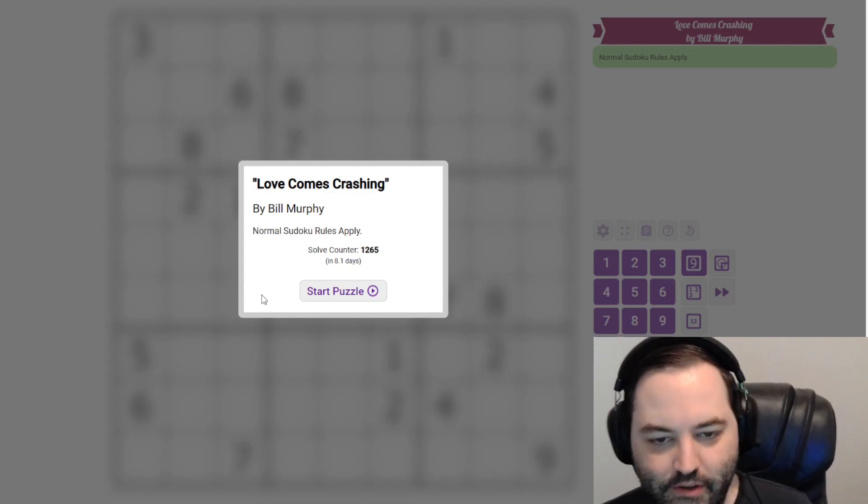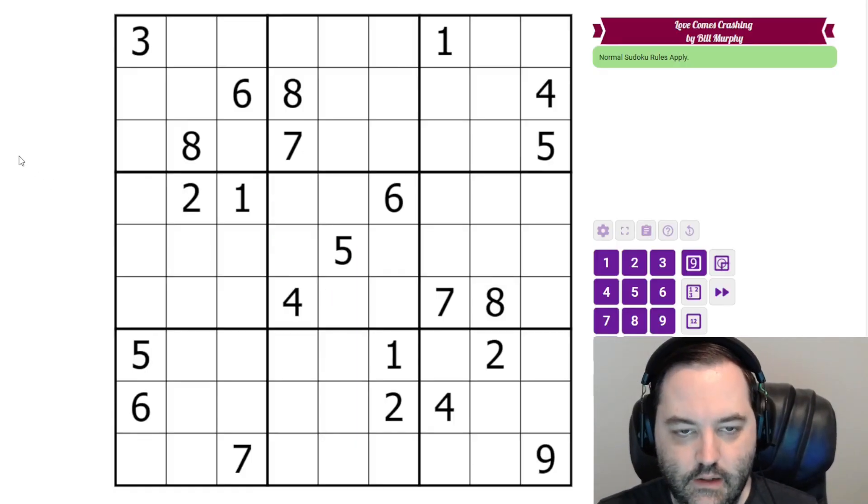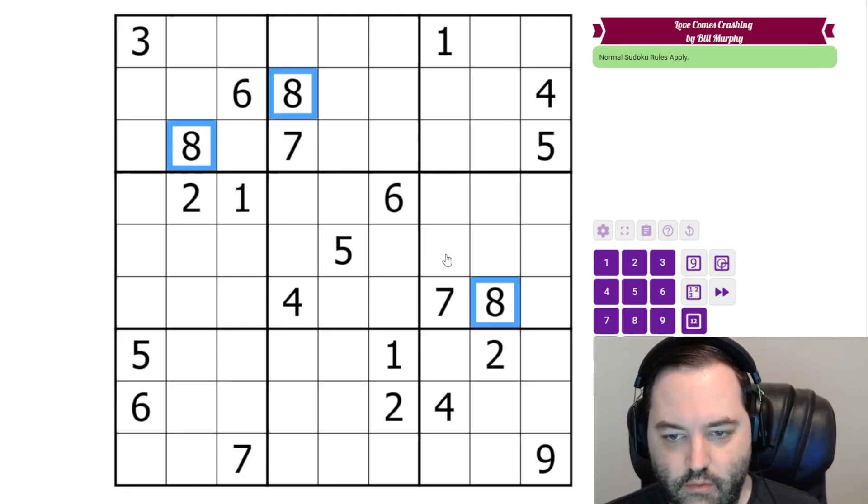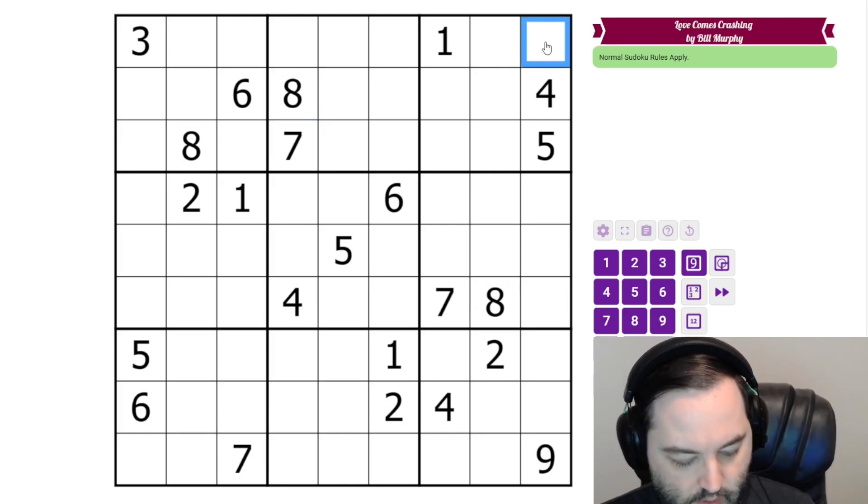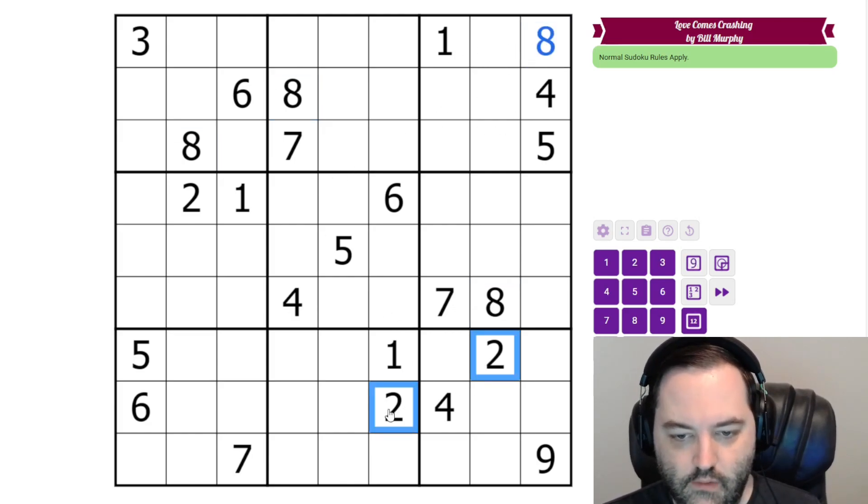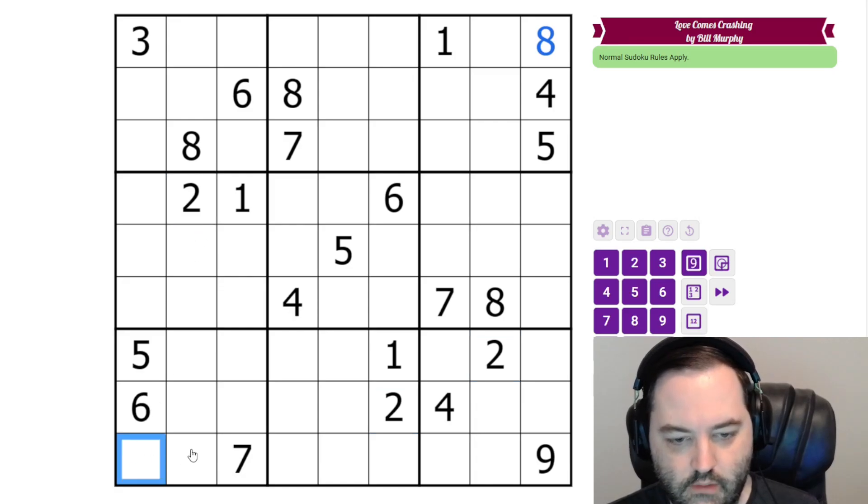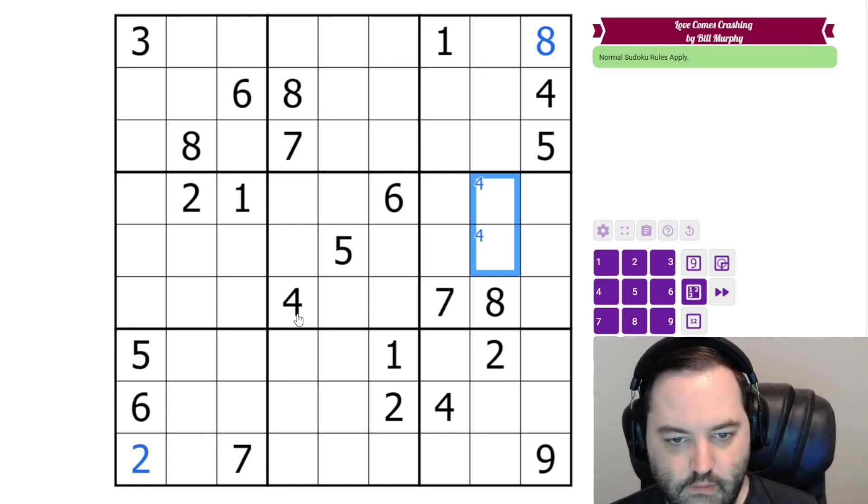The second puzzle is called Love Puttons Crashing. Again, it is a classic Sudoku. And I think I've solved this one as well, but I don't really remember it very well. We've got eights looking into this box. The only place for eight is here. We've got twos looking into this box. So that's a two.